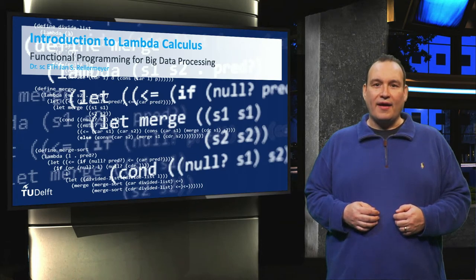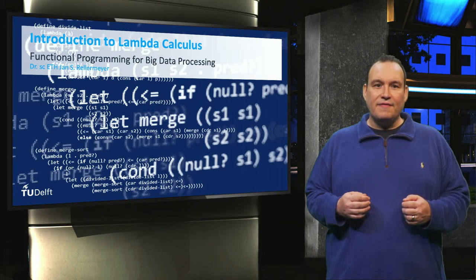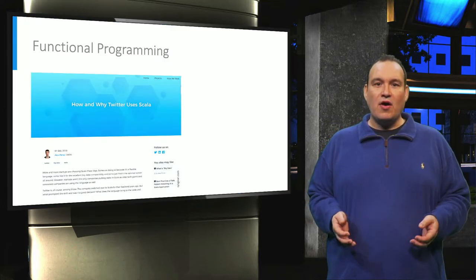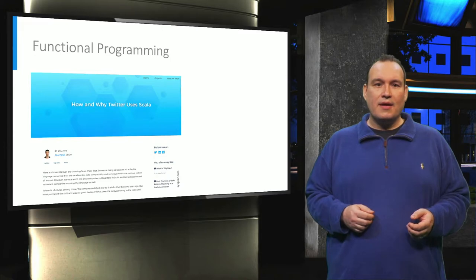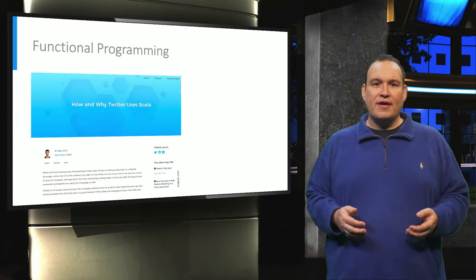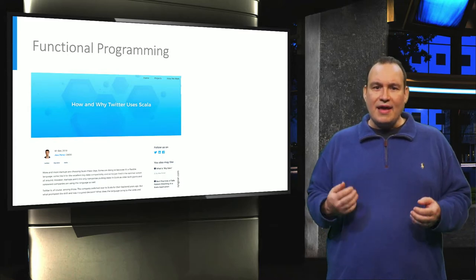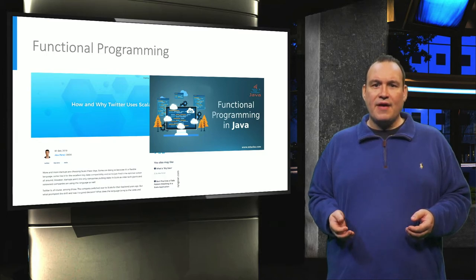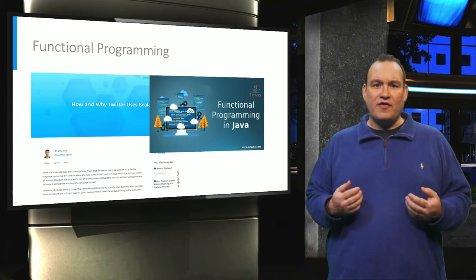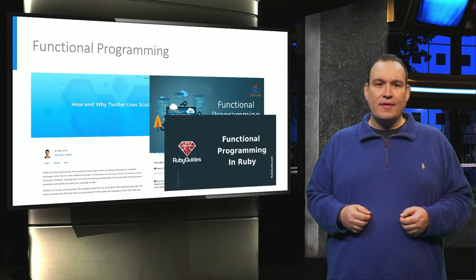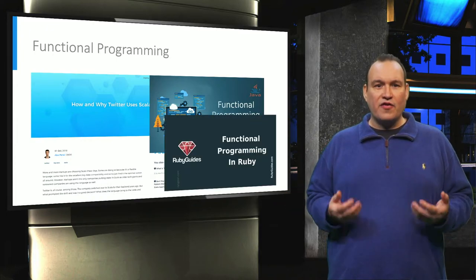Functional programming has been around for decades, going back to the 1950s. Yet it has recently become an extremely hot topic in the industry. The entire software infrastructure of companies like Twitter is written in functional programming languages. Even languages that were originally fully imperative have adopted ideas from functional programming. Why is this the case? Why this renaissance of functional programming?